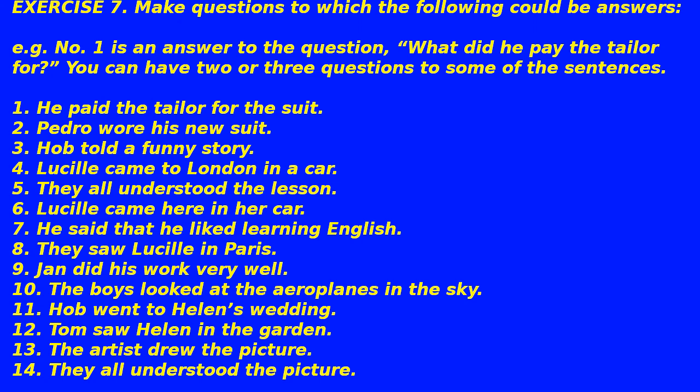1. He paid the tailor for the suit. 2. Pedro wore his new suit. 3. Hob told a funny story. 4. Lucille came to London in a car. 5. They all understood the lesson. 6. Lucille came here in her car. 7. He said that he liked learning English. 8. They saw Lucille in Paris. 9. Jan did his work very well. 10. The boys looked at the aeroplanes in the sky. 11. Hob went to Helen's wedding. 12. Tom saw Helen in the garden. 13. The artist drew the picture. 14. They all understood the picture.